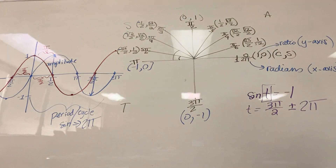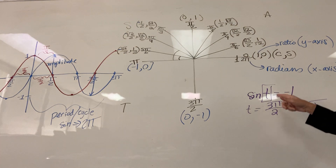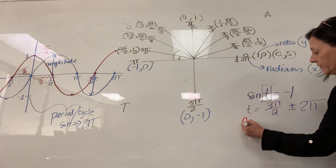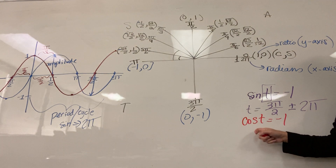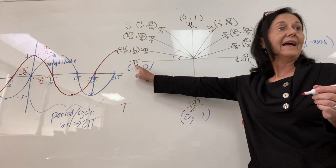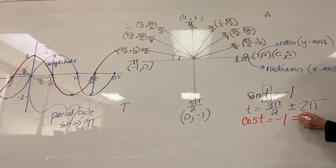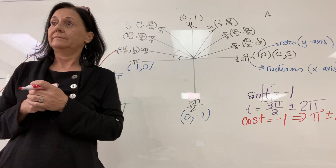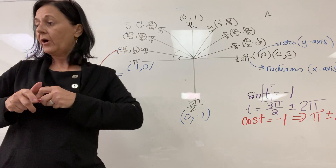For what values of t does cosine of t equal negative one? The cosine is negative one at pi, so t equals pi, plus or minus two pi — it's going to repeat every two pi to the left and to the right. There are an infinite number of solutions.